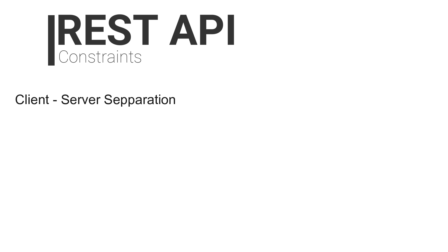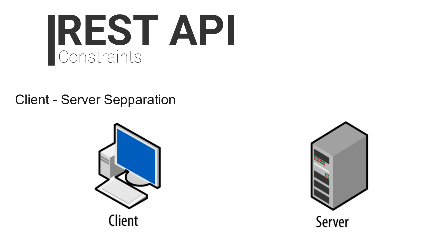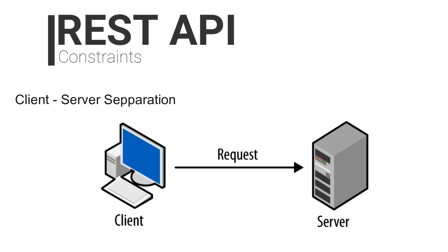Client-Server Separation: the client exclusively makes requests while the server exclusively responds to those. The client initiates every interaction knowing the URI of the requested resource. The server responds by passing on the requested data without the capability to make independent modifications. The isolation of client and server allows ease of management — there's no worry over components modifying each other during independent changes, simplifying the optimization and scaling process.